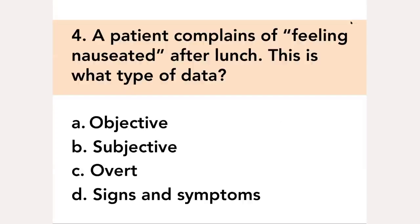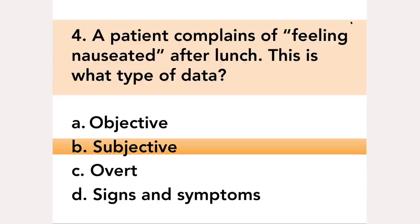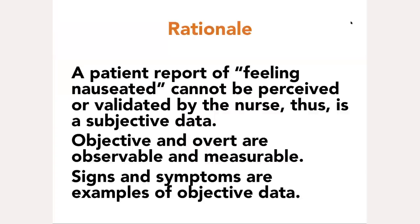A patient complains of feeling nauseated after lunch. This is what type of data? A. Objective, B. Subjective, C. Overt, D. Signs and Symptoms. A patient's report of feeling nauseated cannot be perceived or validated by the nurse. Thus, it is subjective data. Objective and overt are observable and measurable. Signs and symptoms are examples of objective data.